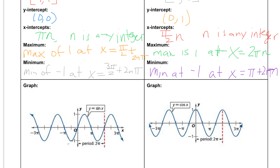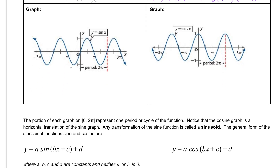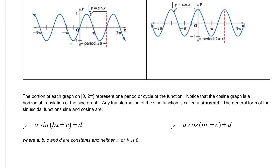If you have any questions about this, let me know. Also take a look at the general forms of the equations for the sine and cosine functions shown at the bottom. We are going to be looking at how the a value, the b value, the c value, and the d value affect our graph.